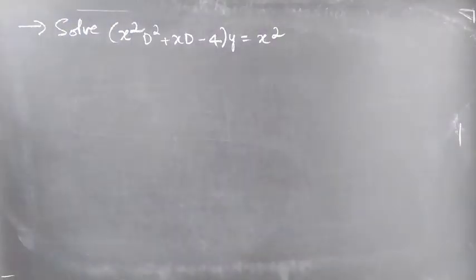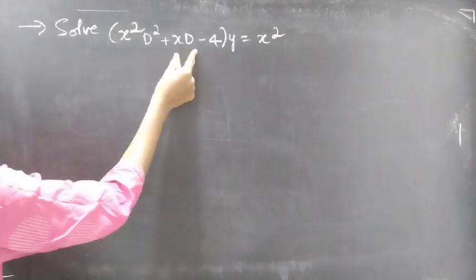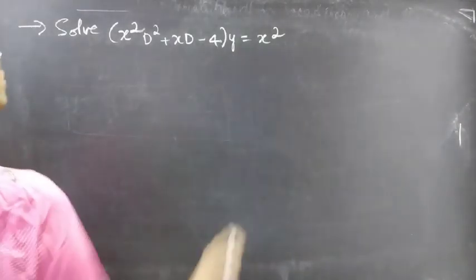Problem: solve x squared D squared plus x D minus 4 into y equals x squared.